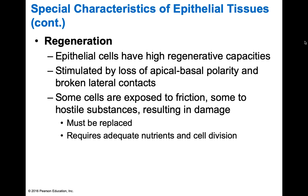Our epithelial cells have high regenerative capabilities. Your skin has dead skin all the time — if you exfoliate, you're removing surface dead skin. Regeneration is stimulated by the loss of apical or basal polarity and broken lateral contacts. When cells are exposed to friction, hostile substances, or anything abrasive, they get damaged and must be replaced. This requires nutrients and cellular division — specifically mitosis, which is how we make more body cells. Epithelial tissues are body cells, so mitosis is used to replace them.